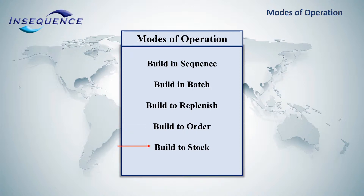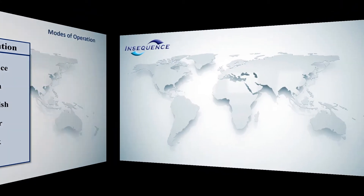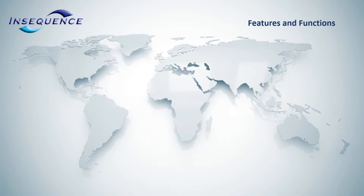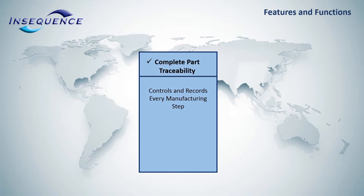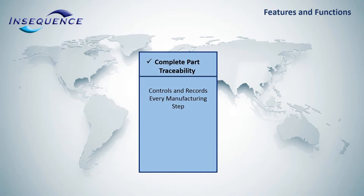Build-to-stock allows the supplier to build inventory and safety stock. The MES program is extremely large, complex, and contains an innumerable amount of capabilities and features. Let's dive into some of the most commonly used and applied. Complete part traceability: MES controls and records each step of the manufacturing process to provide complete cradle-to-grave traceability.